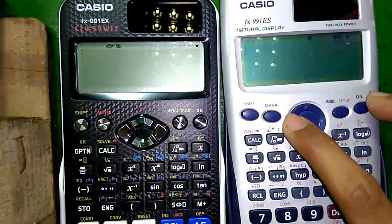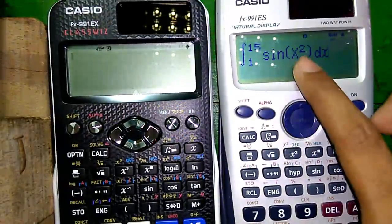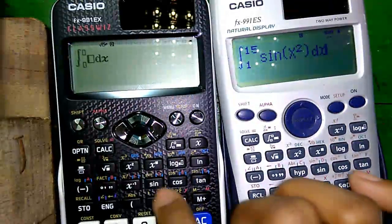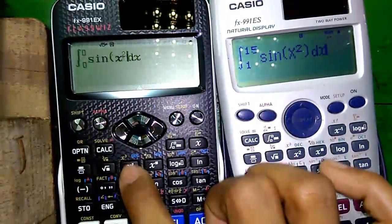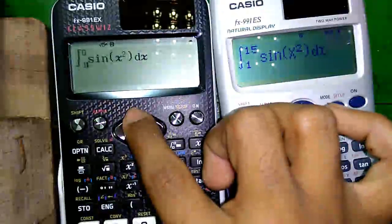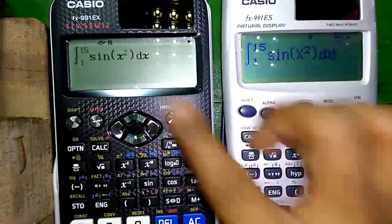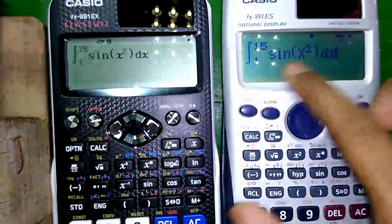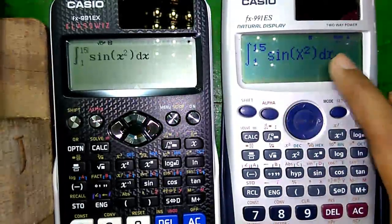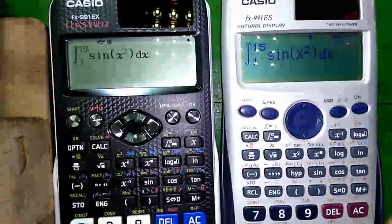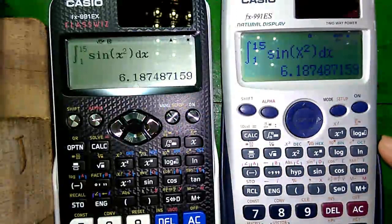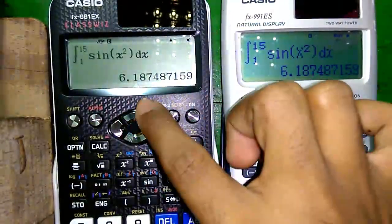Let's check the processing power of both calculators. So here I am integrating sine x squared from 1 to 15. Let's do it on this calculator also. So here this calculator has got a little small font compared to this one which has a larger font. And this display LCD is a little bit of bluish type. And this one is normal LCD type. Let's press the equals to button simultaneously. So you can see, this calculator is a lot more faster than this one. It instantaneously gives you the answer.